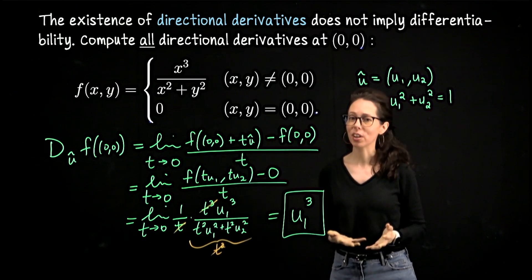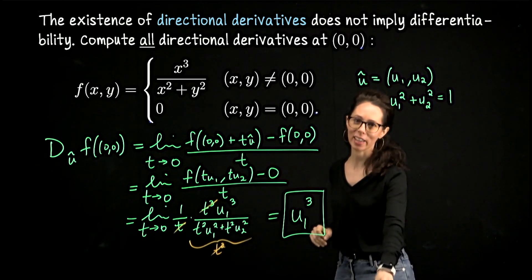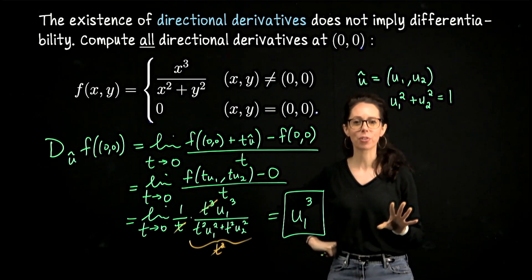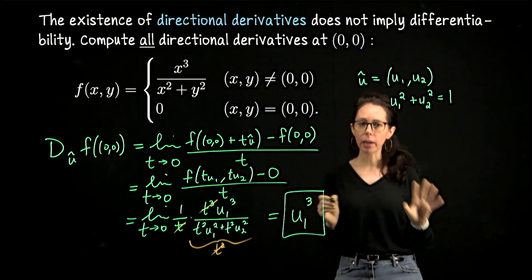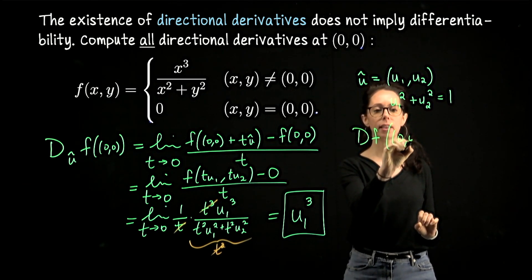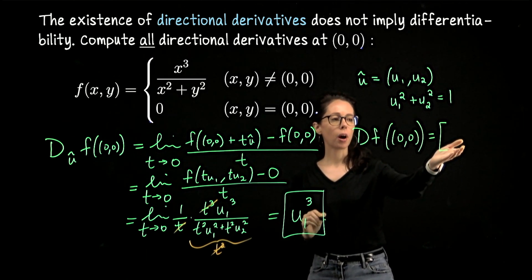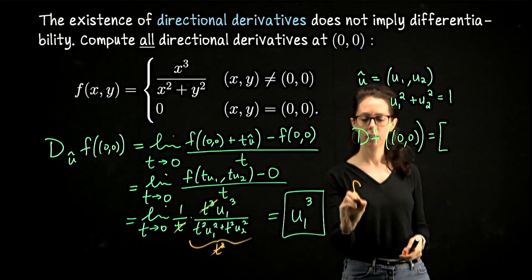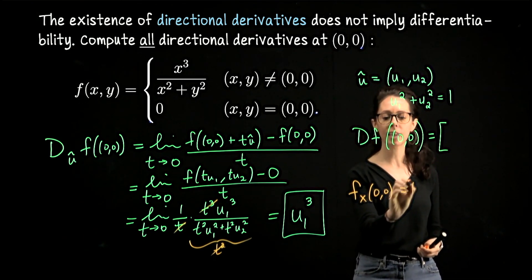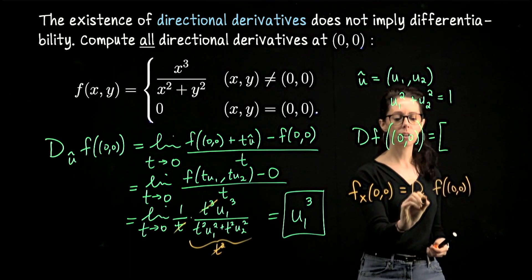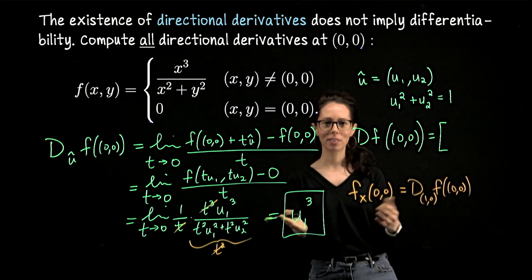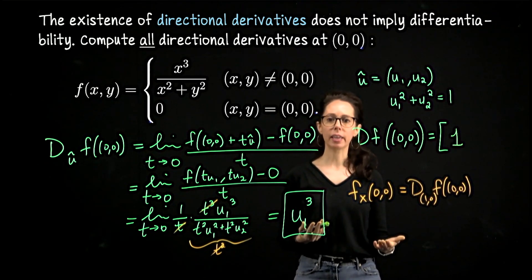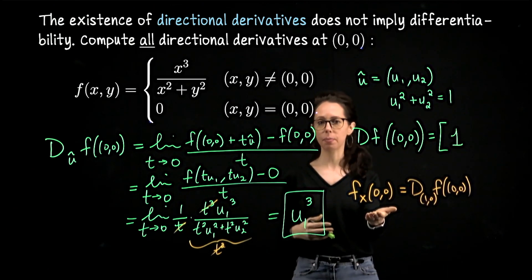The next question is whether this function is differentiable — we've already stated it isn't, but let's see how to get there. To assess differentiability, we want to put together the Jacobian matrix. I'm going to use a shortcut rather than plugging directly into the definition. The Jacobian will involve the partial derivative with respect to x at the origin and then with respect to y. The partial derivative with respect to x is the same as the directional derivative in the direction (1, 0), so we cube the first coordinate: 1³ = 1. Similarly, the partial with respect to y is the directional derivative in direction (0, 1), giving 0³ = 0.